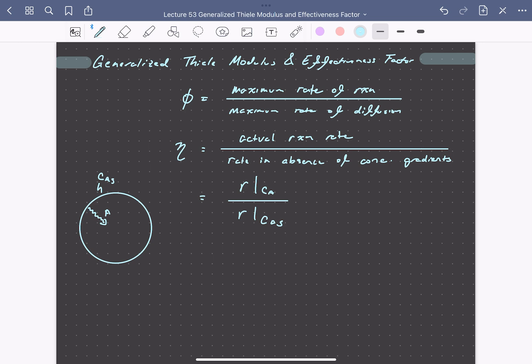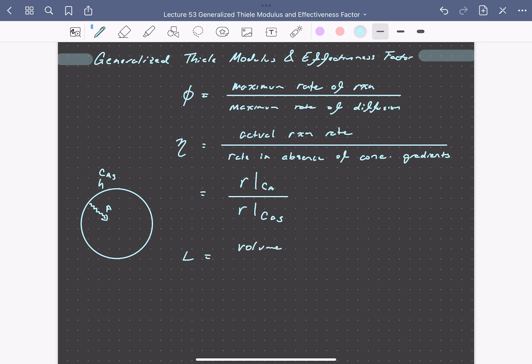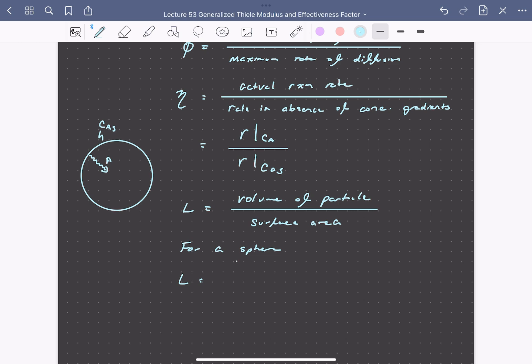The Thiele modulus can be defined in a way that's general to the geometry of the catalyst particle by first defining a characteristic length scale for diffusion. We'll label this L. So L will be the volume of the particle divided by its surface area. So for a sphere, for example, the volume would be 4 thirds pi times the radius of the particle cubed divided by the surface area, 4 pi r squared. So we would have an L value of the radius of the particle divided by 3.